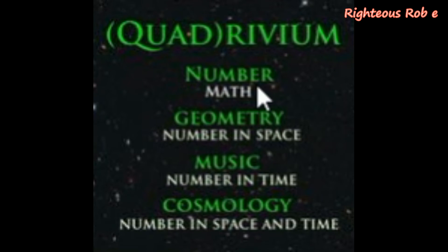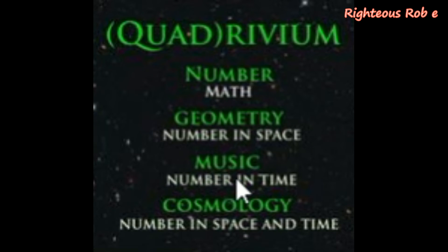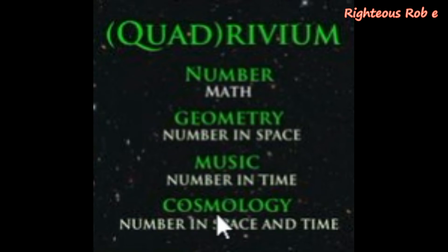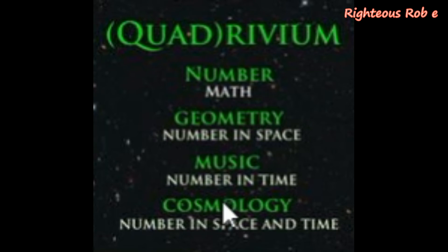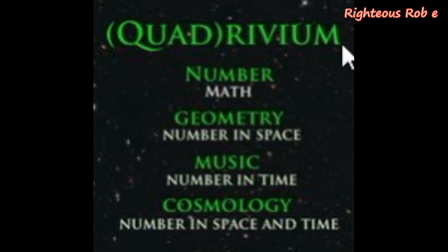The four letters of Moon represent the quadrivium: number; number in space, which is geometry; number in time, which is music — the universe is a song; and number in space and time, which is cosmology. The holy names Jesus and Yeshua together show the cosmology of our earth as it passes through the twelve constellations of the zodiac, taking 25,920 years to complete, each age two thousand one hundred and sixty years.